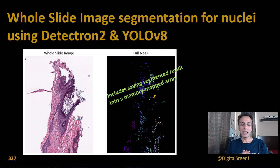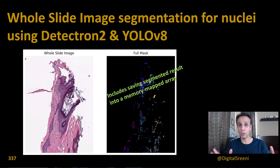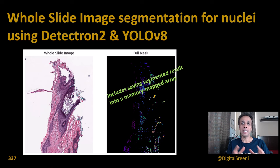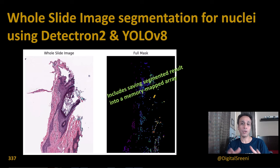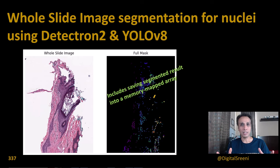Hello everyone, welcome back. I hope you watched the last tutorial about training Detectron 2 and YOLO v8 models using an amazing nuclei dataset that we downloaded from Kaggle. We cleaned up the data, organized it, and converted the labeled mask annotations into COCO JSON format so we can use those to train our Detectron model, and also into YOLO format.